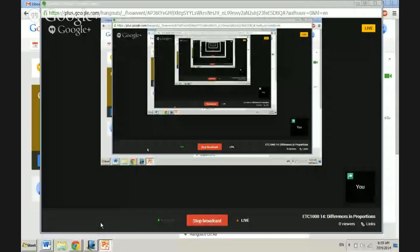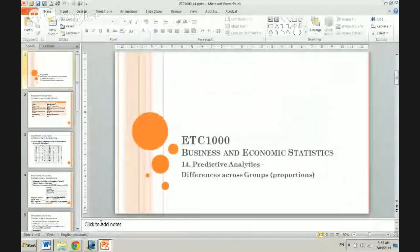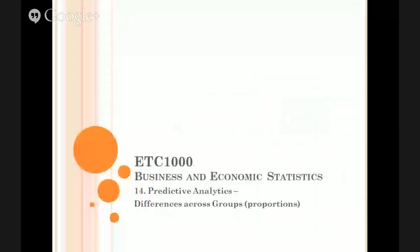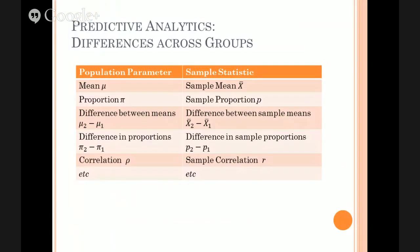Hello there. We're up to the 14th in this series of lectures which are based around the curriculum of ETC 1000. Today we're going to think about comparing across groups as we've been doing in other videos if you've been watching the series. But in this particular case we're thinking about groups and characteristics of these groups according to the proportions of particular characteristic. So there's the topic.